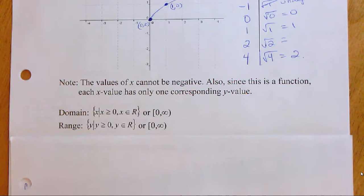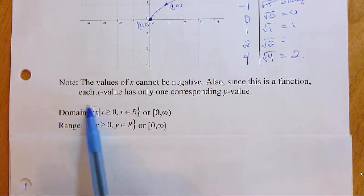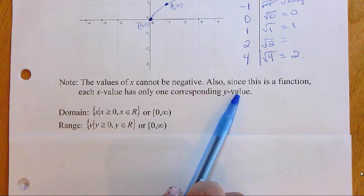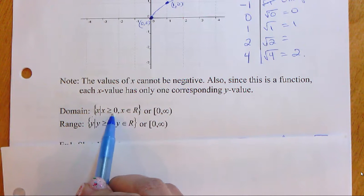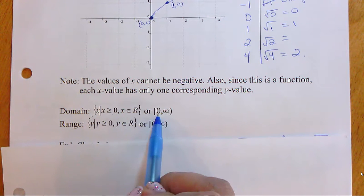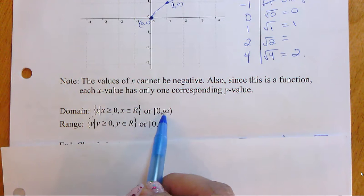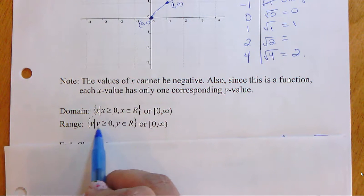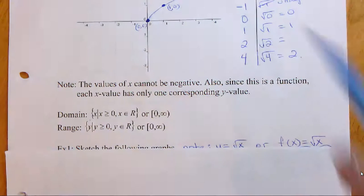The values of x cannot be negative. Also, since it's a function, each x value has only one corresponding y value. The domain is x greater than or equal to zero — in interval notation: [0, ∞). And y is greater than or equal to zero, so both x and y are in the non-negative region.